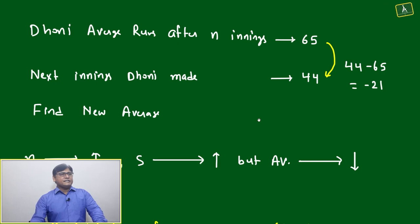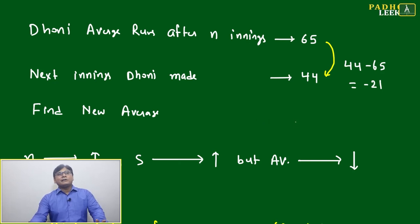Let's analyze a different case where the addition of runs is less than the average value. We'll take the same question from a different perspective. The average run after n innings is 65. In the n+1 inning, he is making 44 runs.